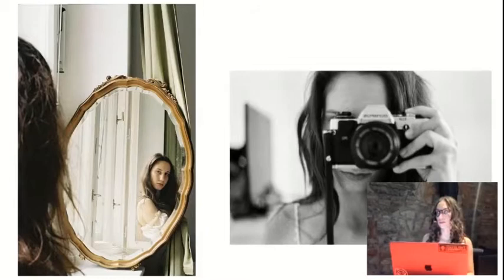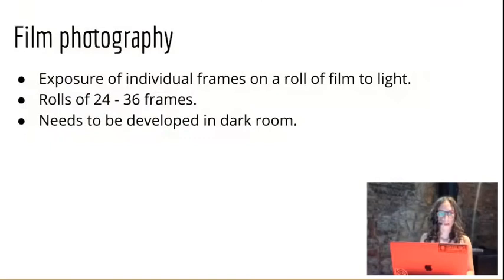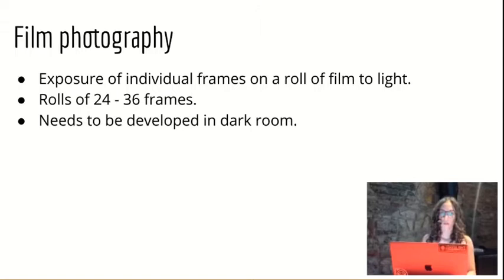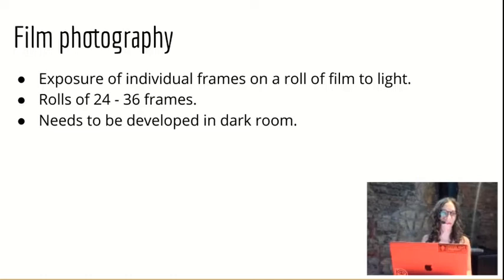I would like to describe the difference between film photography and digital, in case somebody doesn't know. Film photography has been around a long time — over 100 years, originating sometime in the late 19th century. What you do is buy a roll of film and put it in your camera. When you press the shutter, the individual frame is exposed to light and that's how the image is created. Usually the roll is very limited — from 24 to 36 frames — and you have to develop it in a darkroom afterwards.